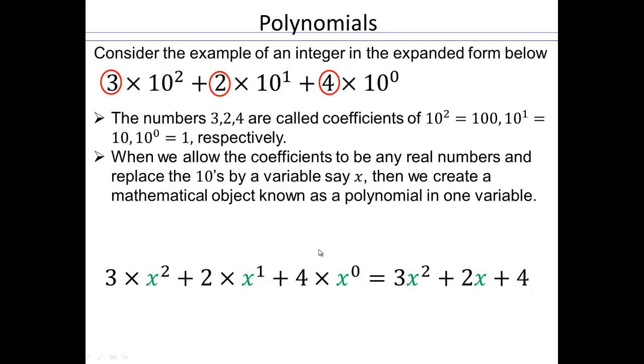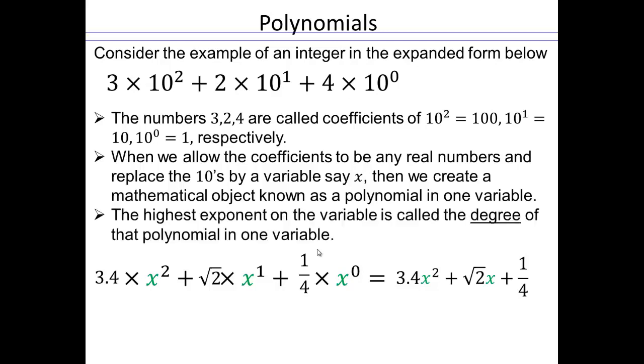To have any generic polynomial in one variable, you can also change the coefficients. We're not restricted to just integers. You can replace the 3, 2, and 4 with real numbers, and then you have a different polynomial. So again, we have 3.4x squared plus square root 2x plus 1 fourth. That's an example of a polynomial.